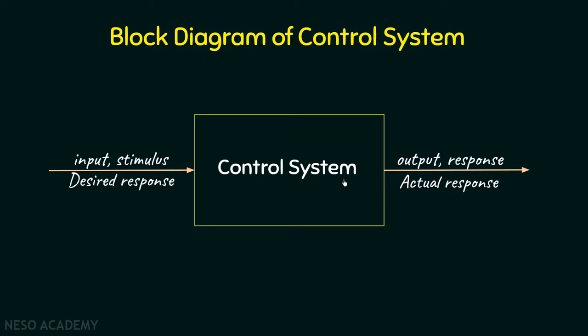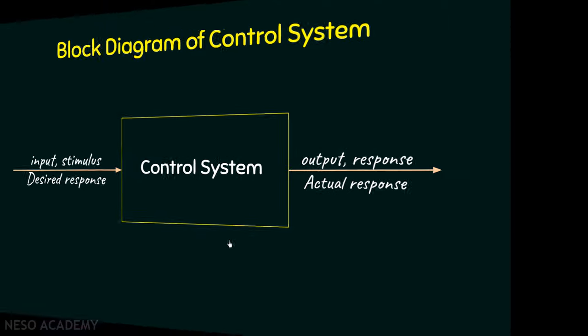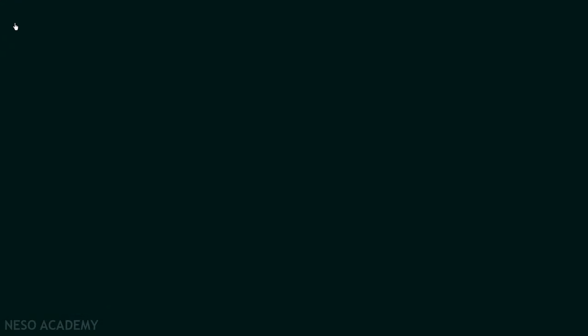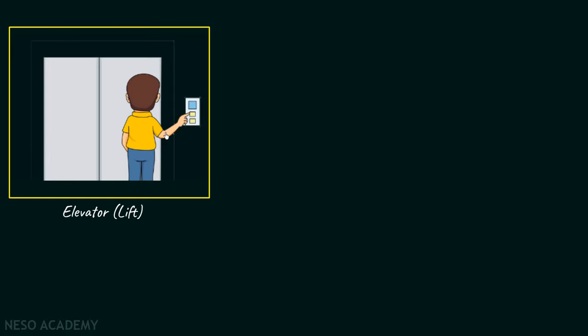Let's start with the help of an example. Suppose we are at the ground floor of a building and we wish to move to the fourth floor. We will enter an elevator and push the fourth floor button inside it. In response to that, the elevator will start moving upwards gradually and after some time, it will reach the fourth floor.